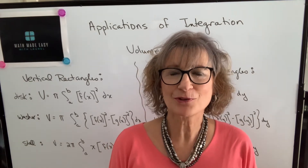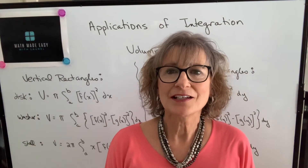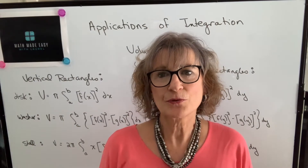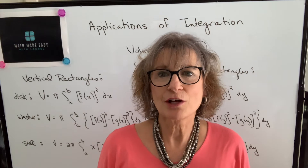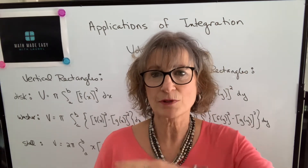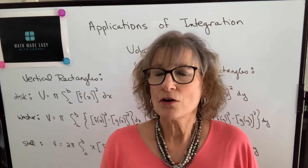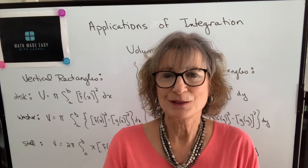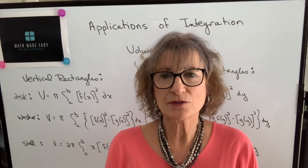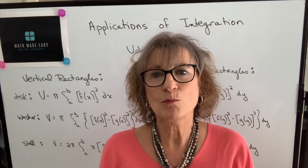Hi, welcome to my channel Math Made Easy with Laurel. I'm Laurel and in this video we're going to take a look at a summary of volumes. So far we've talked about the disc method, the washer method and the shell method for finding volumes. We've talked about vertical rectangles, horizontal representative rectangles and it's all very confusing. I see students mixing up the method with the type of rectangle they use, so I want to summarize it and give you some guidelines for deciding what method to use.